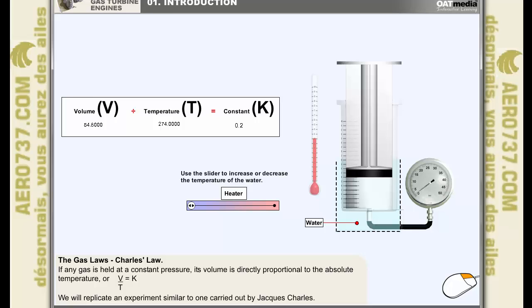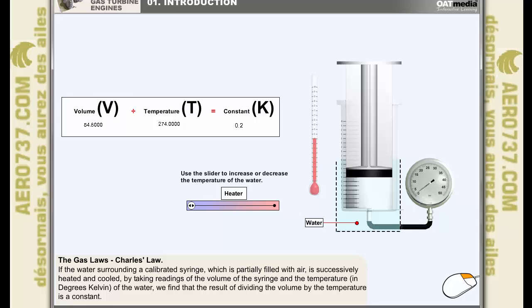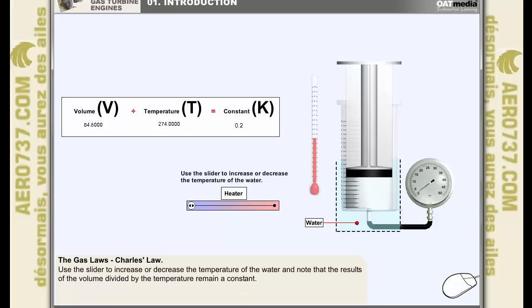Just as we did to demonstrate Boyle's law, we'll replicate an experiment similar to one carried out by Jacques Charles. If we partially fill a calibrated syringe with air and place it in a container of water, then by increasing or decreasing the temperature of the water, and thus increasing or decreasing the temperature of the air inside the syringe, while taking readings of the volume and temperature, and then dividing volume by temperature in degrees Kelvin, we see that the answer is a constant. Remember that in theory the pressure inside the syringe remains constant also. Try changing the temperature of the water for yourself and notice that the results of the volume divided by the temperature remain a constant.